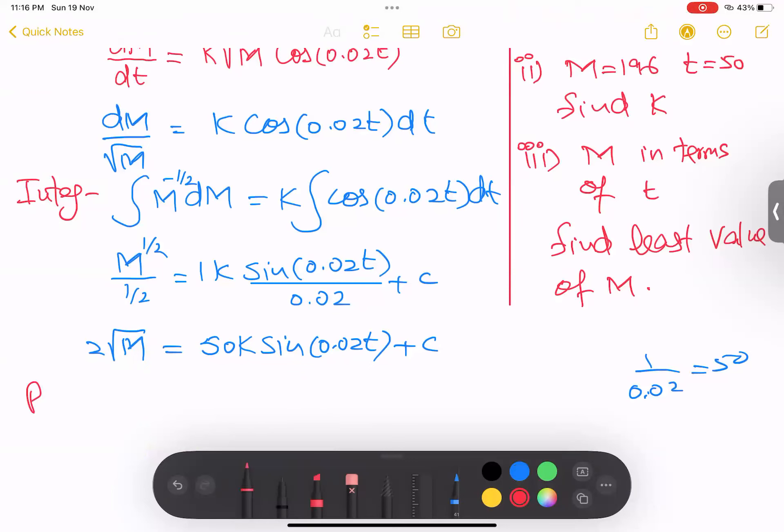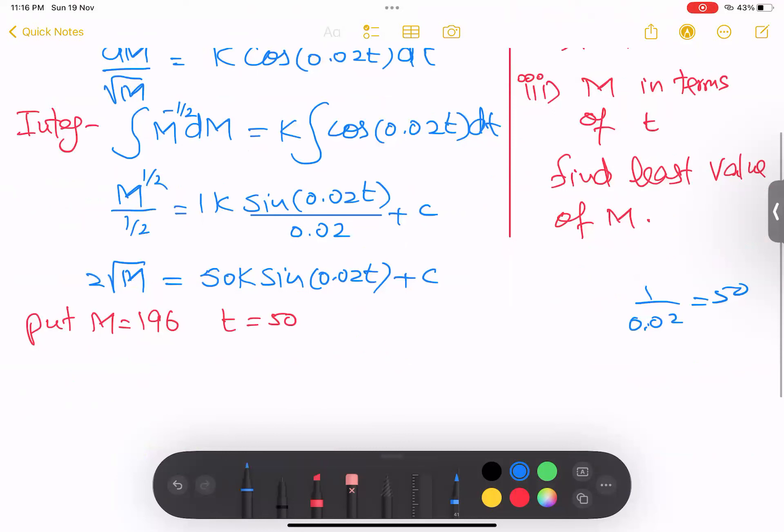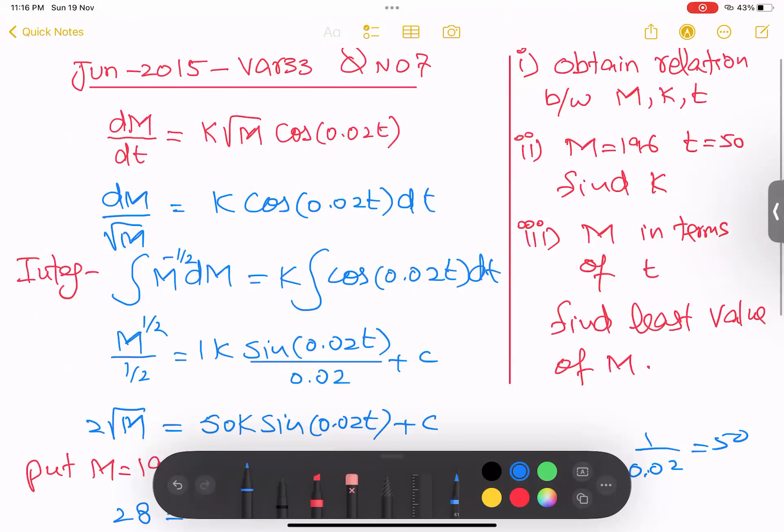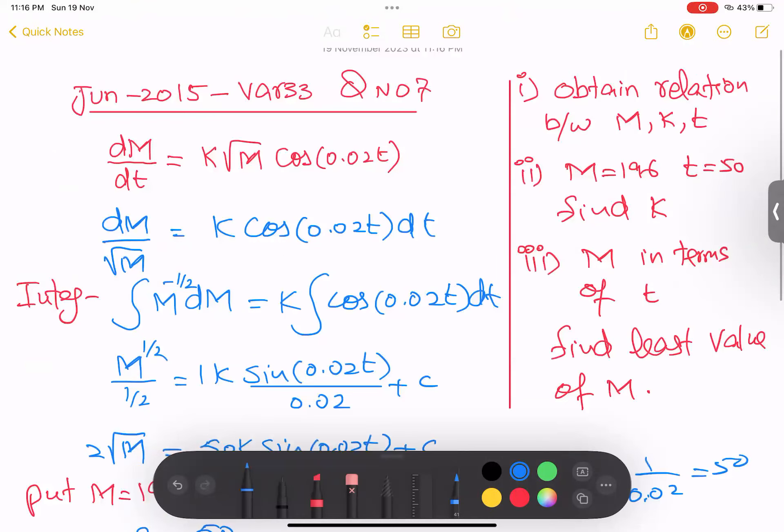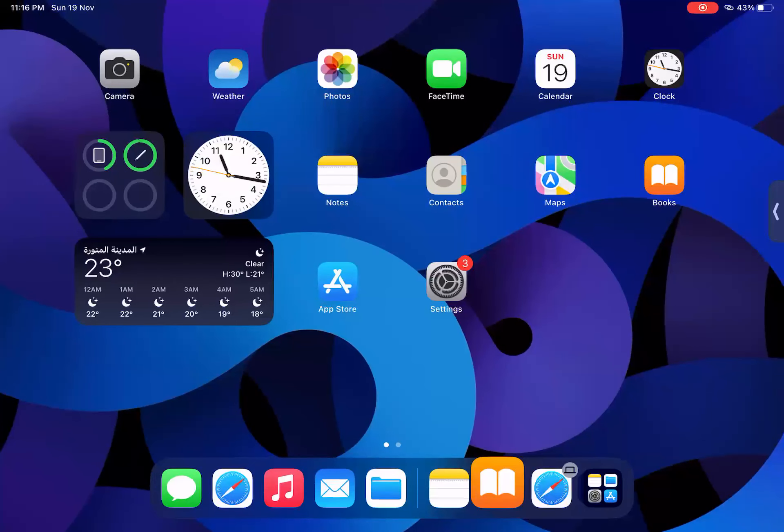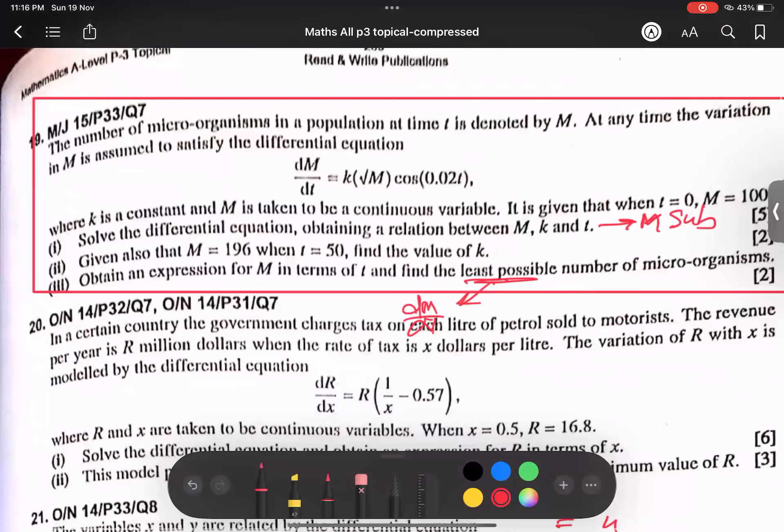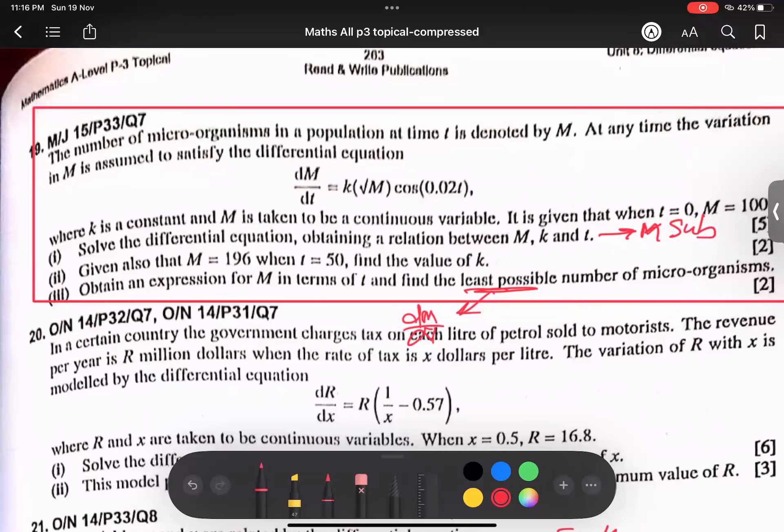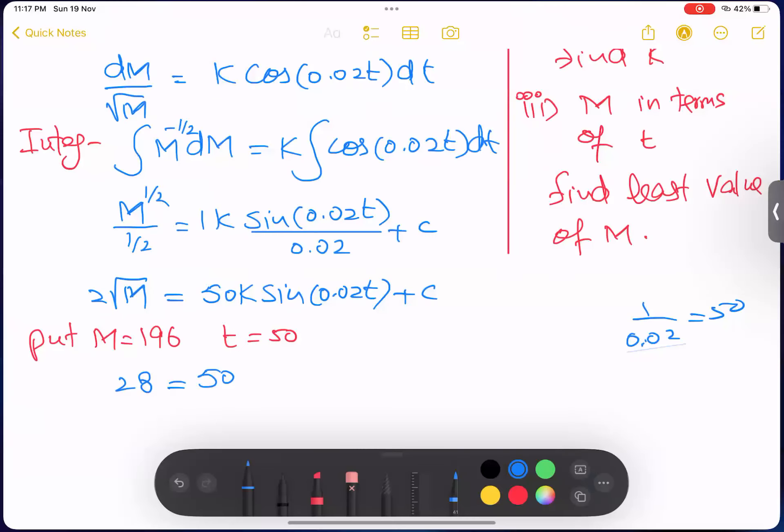I'm saying put M value is 196, and T value 50. So when I keep it inside, so root 196 is 14, and 14 into 228. And what about this, 50... I think one relationship I'm missing. That is maybe even here. And that is mentioned here. I have to read a statement. Yeah, this is missing. T=0, M=100.